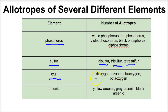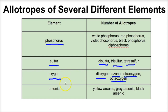Same thing with oxygen. There's the stuff we're breathing right now, which is O2, and then we have ozone, which is O3. Chemically they're identical — both are oxygen, just existing in slightly different forms. You also have O4 and O8, which are two more different allotropes of oxygen.